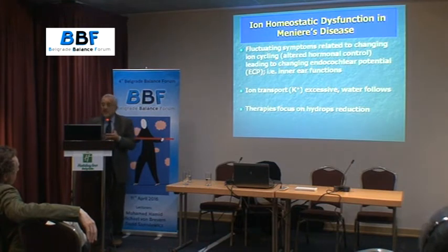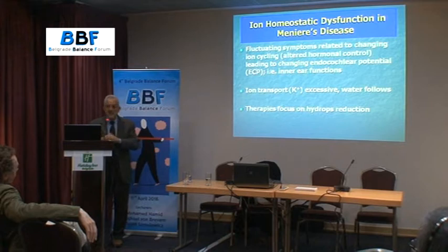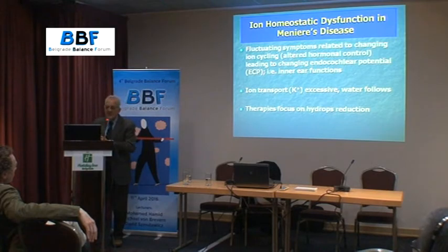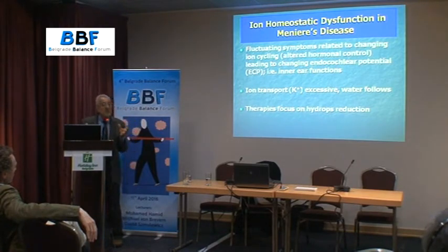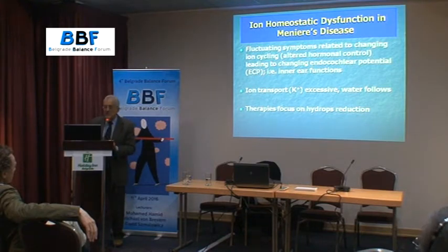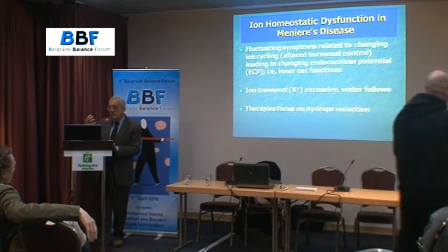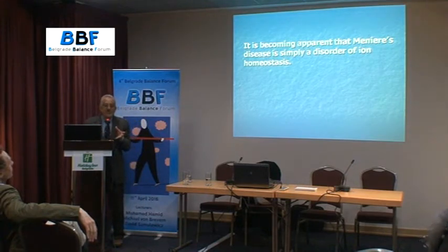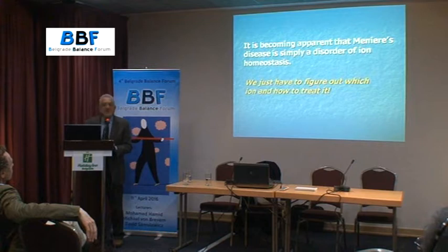How can we explain the fluctuating symptoms based on ion exchange dysfunction? The symptoms can arise with ion recycling abnormality, particularly the potassium recycling going around all the time between the stria vascularis. What we do with these patients is focus on treating the hydropic symptoms, especially in the early phase of the disease — the aural fullness, the sense of hearing loss, even early hearing loss, and also the tinnitus. It is becoming apparent that Meniere's disease simply is an ion homeostatic disorder — the question is which one, and we're still trying to answer that.